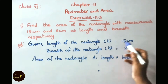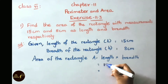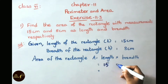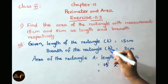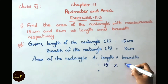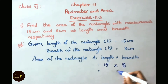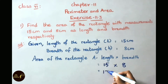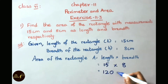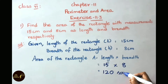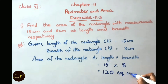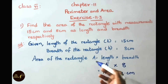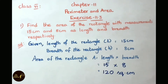We know the area of the rectangle formula: A equals length into breadth. Length value is 15 cm and breadth value is 8 cm. 15 into 8 equals 120 cm². Therefore, area of the given rectangle is 120 cm².